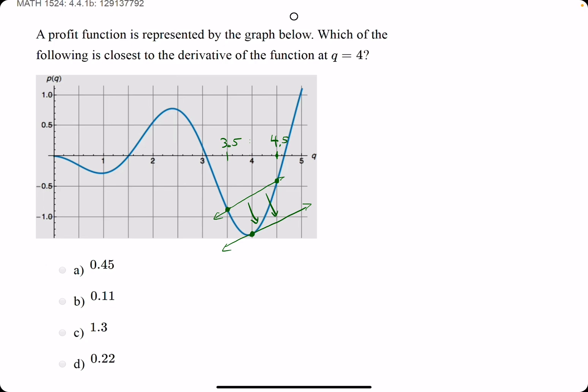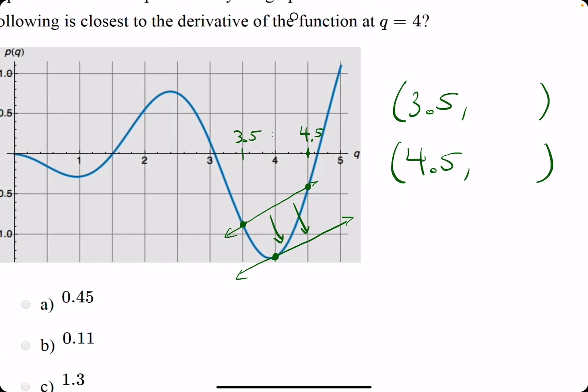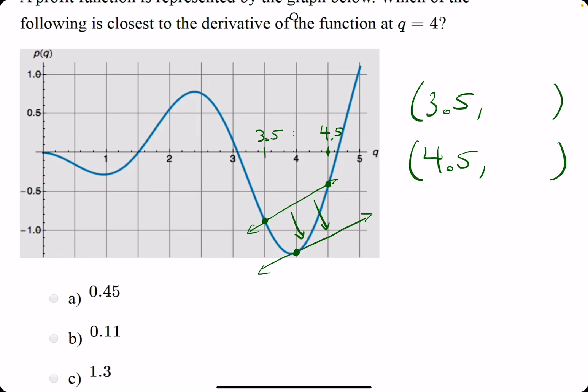So what do we do? We pick our X values, 3.5 to the left of 4, and 4.5 to the right of 4. And we're going to try to identify the Y values at each of these points on this blue curve or on this function.